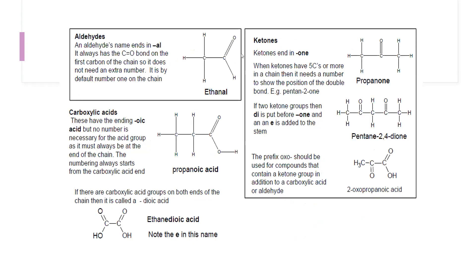For aldehydes, the functional group is C=O with an H, always at the end of the chain, and the name ends in '-al'. With two carbon atoms, since '-al' starts with a vowel we write 'ethanal'. For ketones, the name ends in '-one'; with three carbon atoms and a single bond it is propanone.